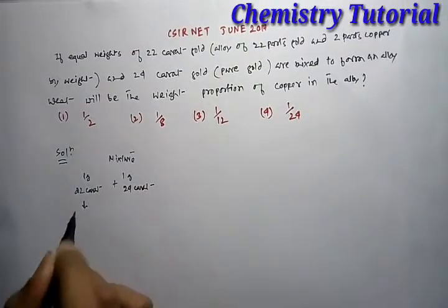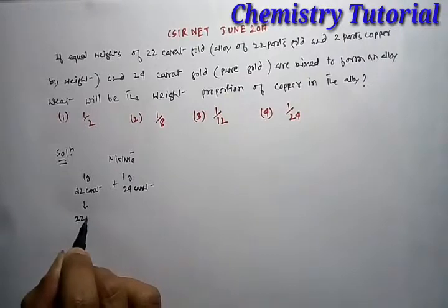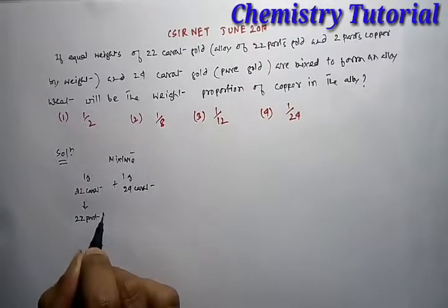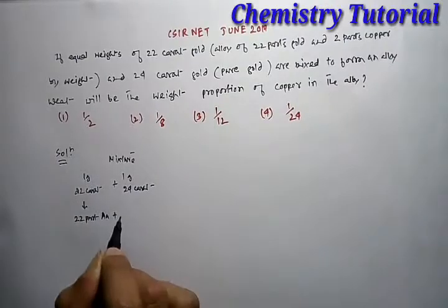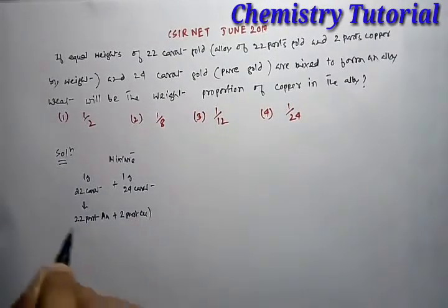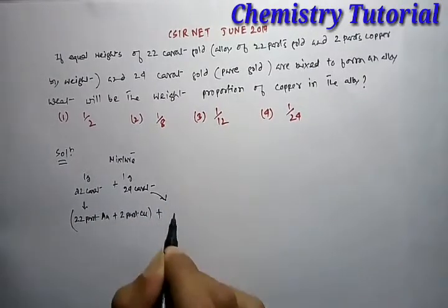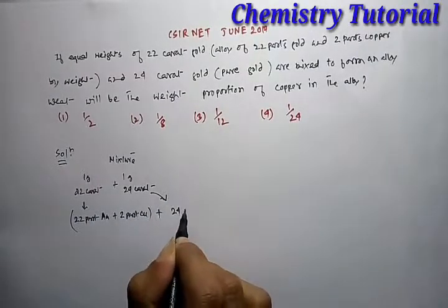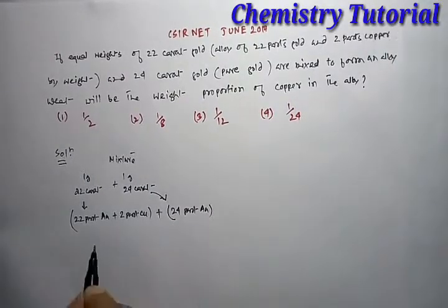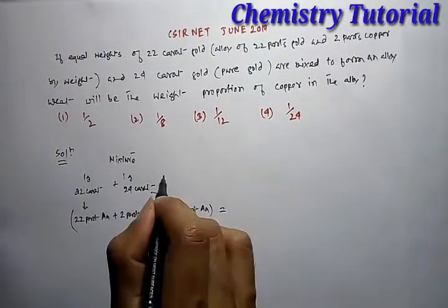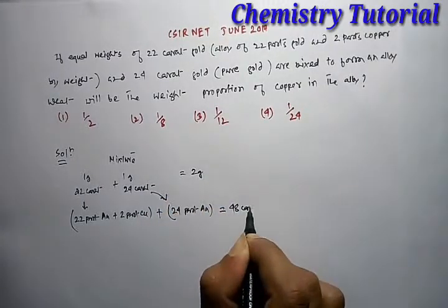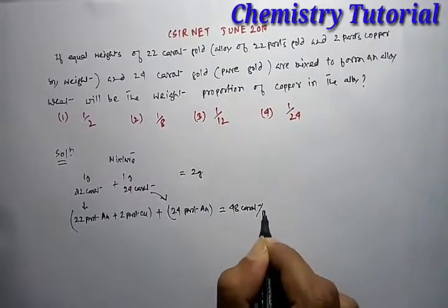In the 22 karat gold, 24 parts: 22 parts are gold and 2 parts of copper. Plus, here, 24 parts are gold. That is, total of 2 grams, 48 karat per part.